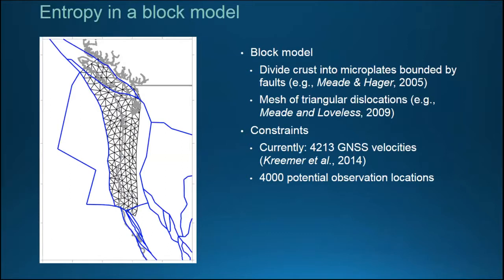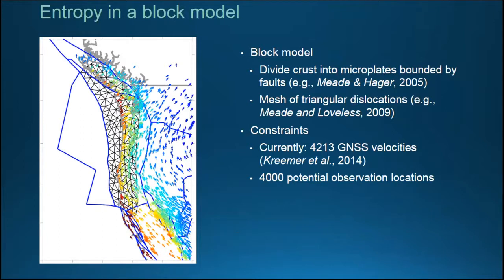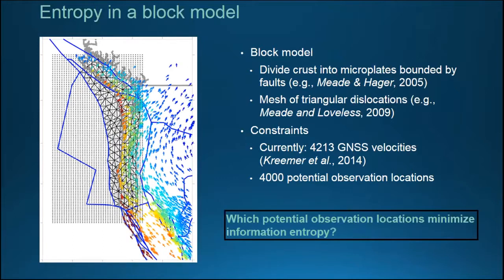I gave this framework to Eileen, and she applied it to the coupling problem — estimating coupling in the Cascadia subduction zone. She discretized the subduction zone using triangular patches embedded in an overall block model. She said: we already have data from 4,213 existing GNSS sites, and we're going to consider 4,000 potential new observation locations. We look at all these potential locations and ask: which ones minimize information entropy? Which give us the most information about coupling?